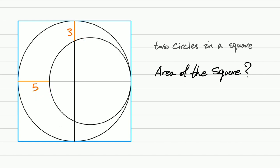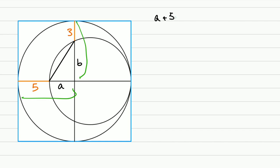So we're going to add a few segments. First this one. Let's call this A and this one B. And these two are radii for the bigger circle. So we can say A plus 5 is equal to B plus 3 or B is A plus 2. We are going to use this later.